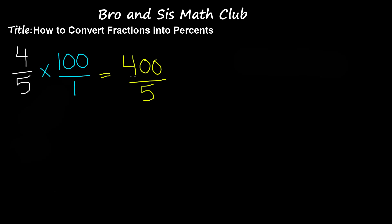We have the improper fraction 400 over 5. When you simplify this, you're going to be dividing 400 by 5, and you get the answer 80. So 80 is our percent, which is 80%. So 4 over 5 can also be represented as 80%.